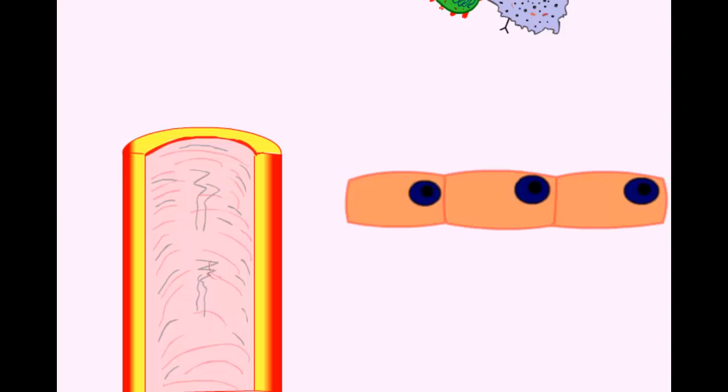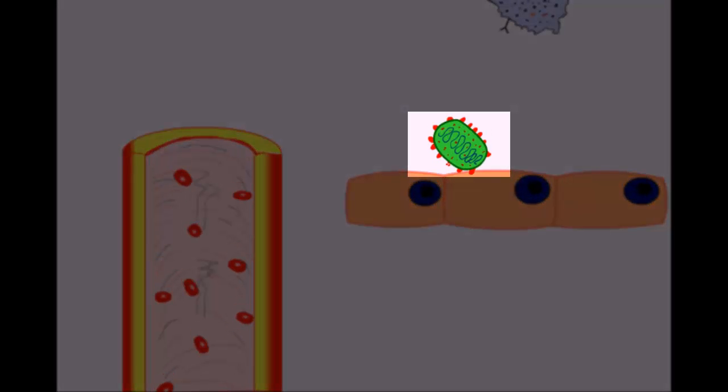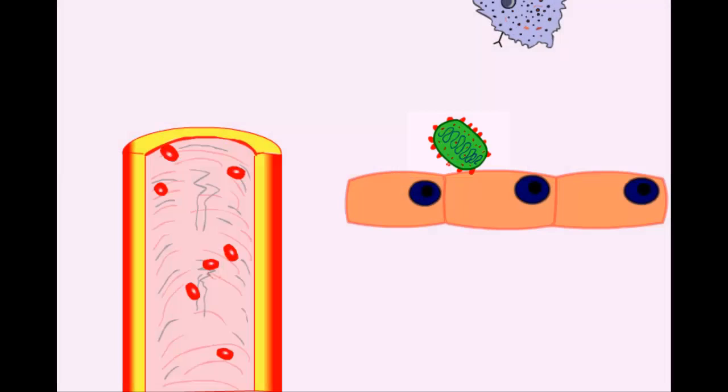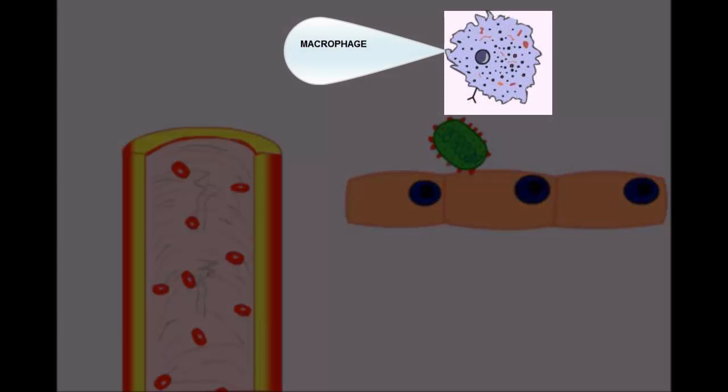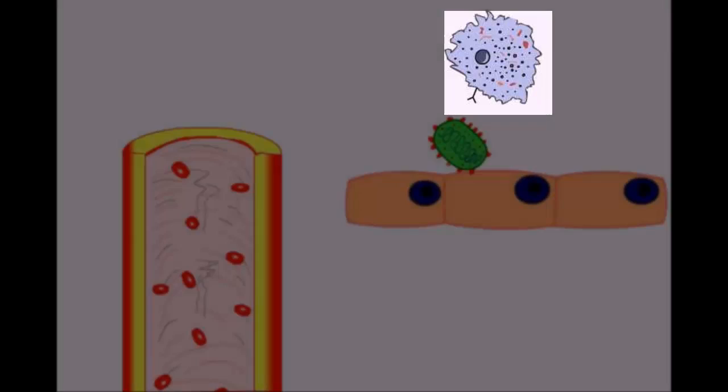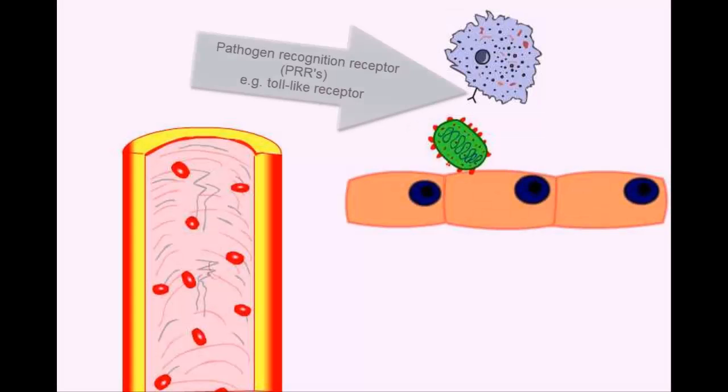Well, the bacteria, which contain foreign sugars and foreign antigen on its surface, trigger off the cells of the innate immune system, which are the first responders. Macrophages, dendritic cells and other cells of the innate immune system have pathogen recognition receptors such as the toll-like receptor,